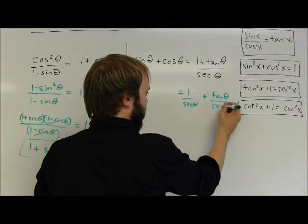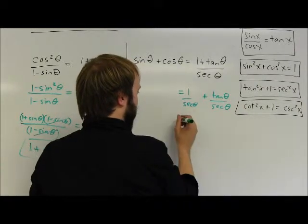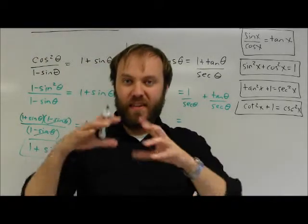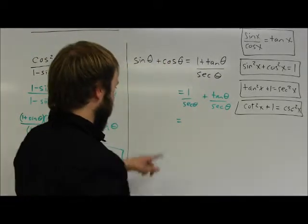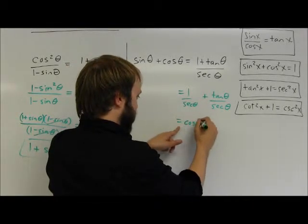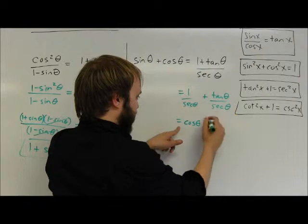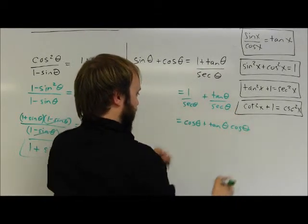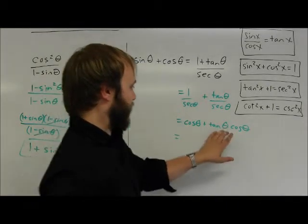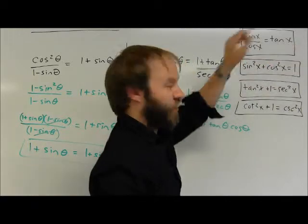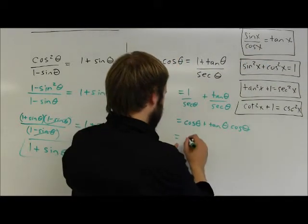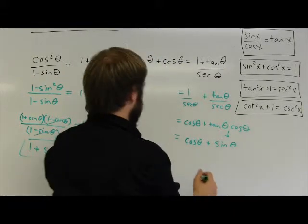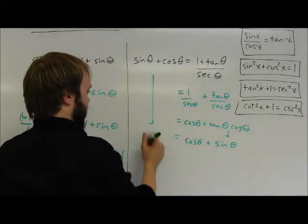I get two fractions with secant theta as the common denominator. Since everything is now written as products and quotients, I can write things in different forms. The first fraction becomes cosine of theta, and tangent over secant is the same thing as tangent of theta times cosine of theta. Tangent times cosine gives me sine. So I have cosine of theta plus sine of theta, which matches exactly what I had at the start.